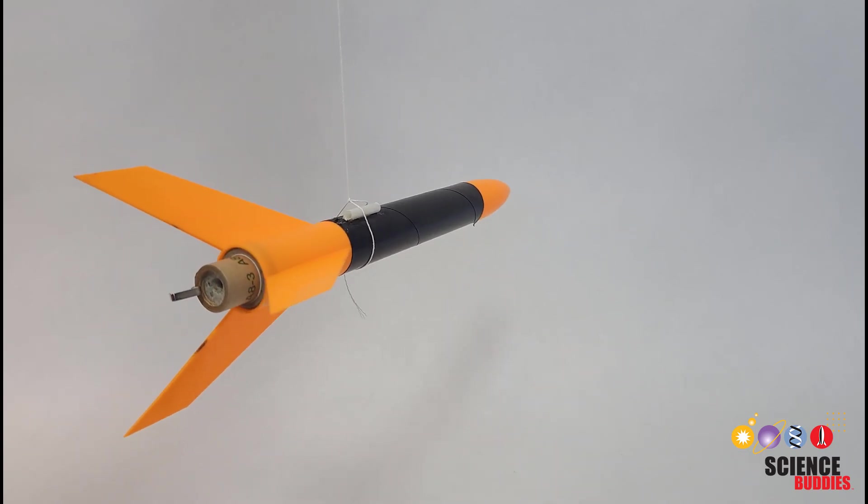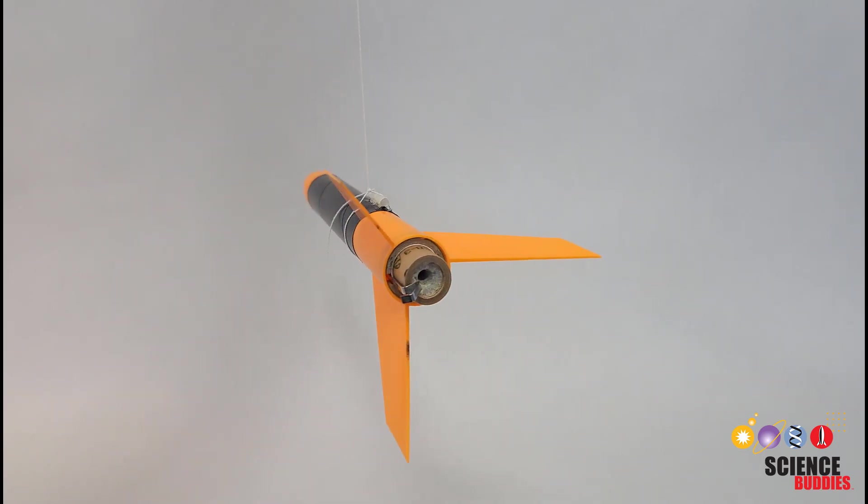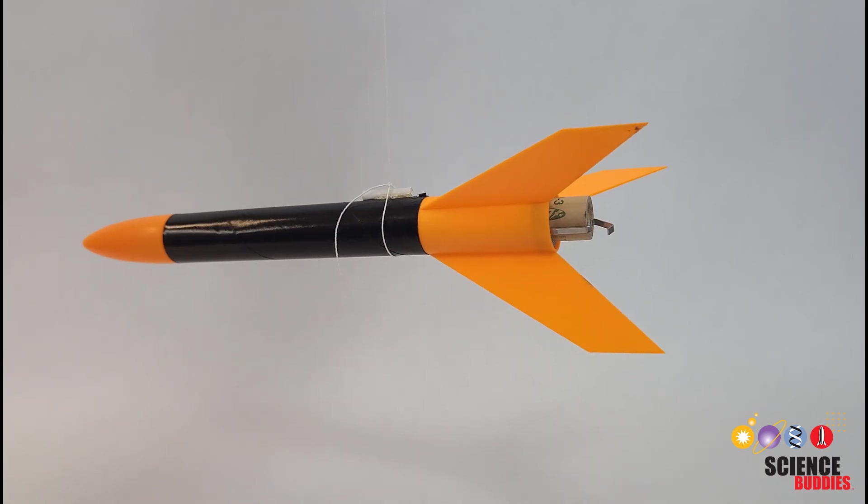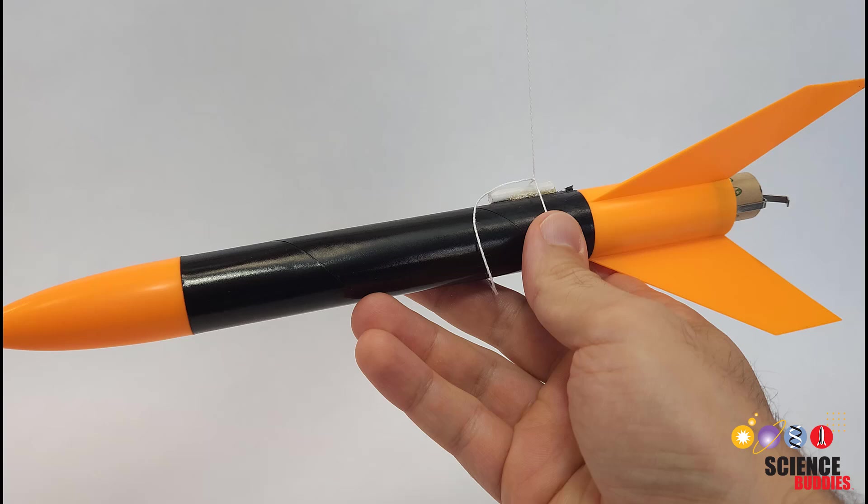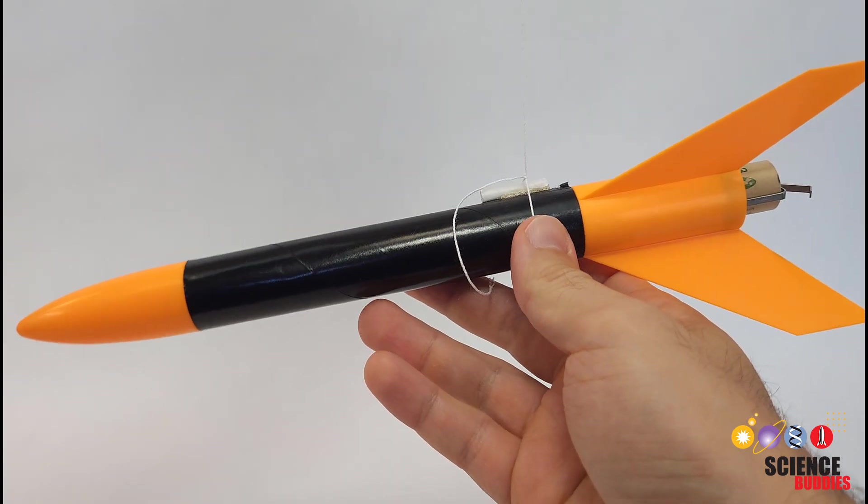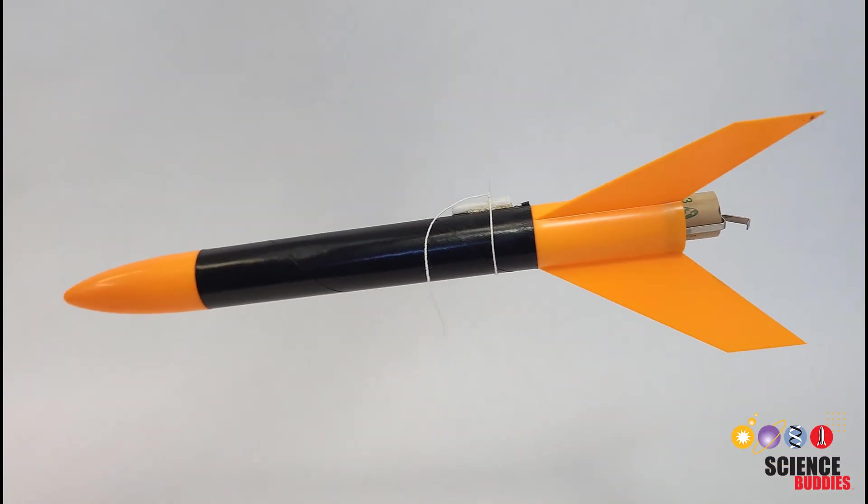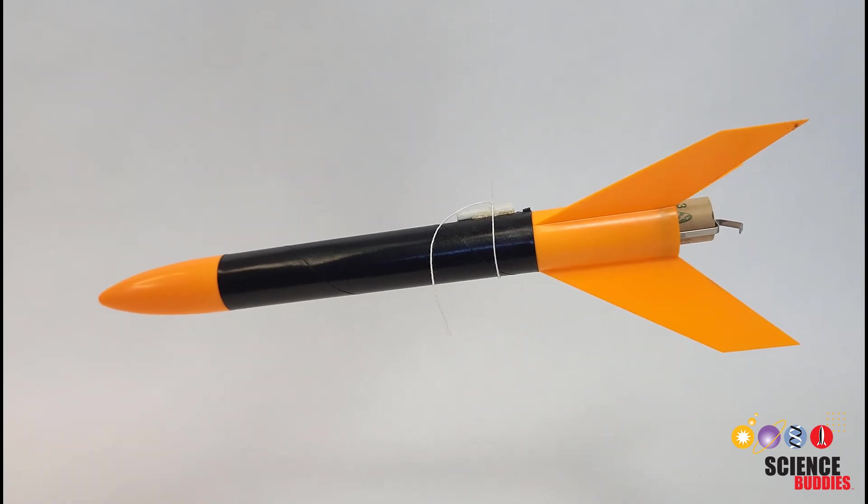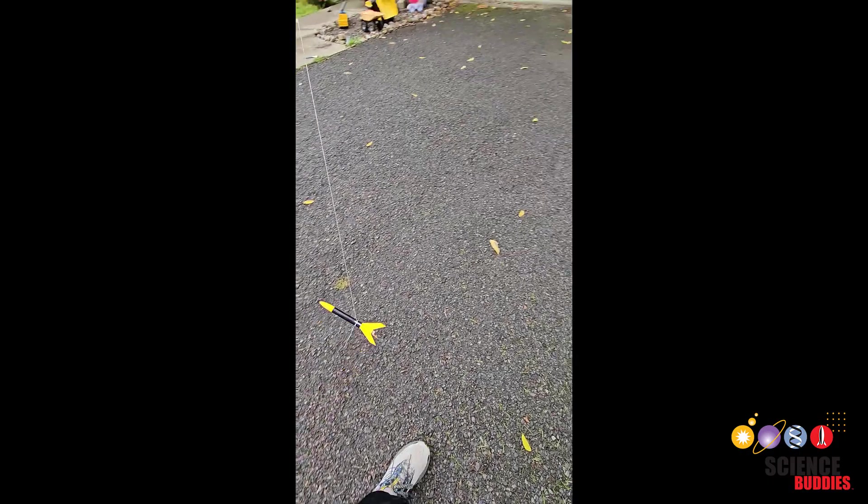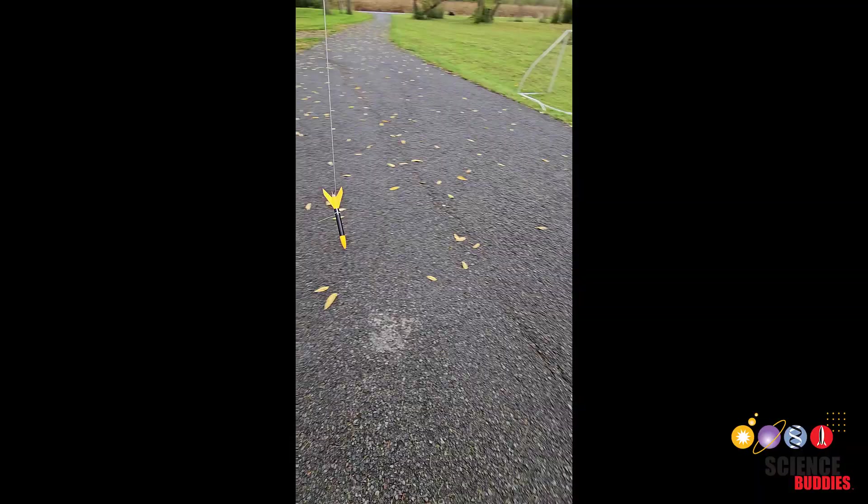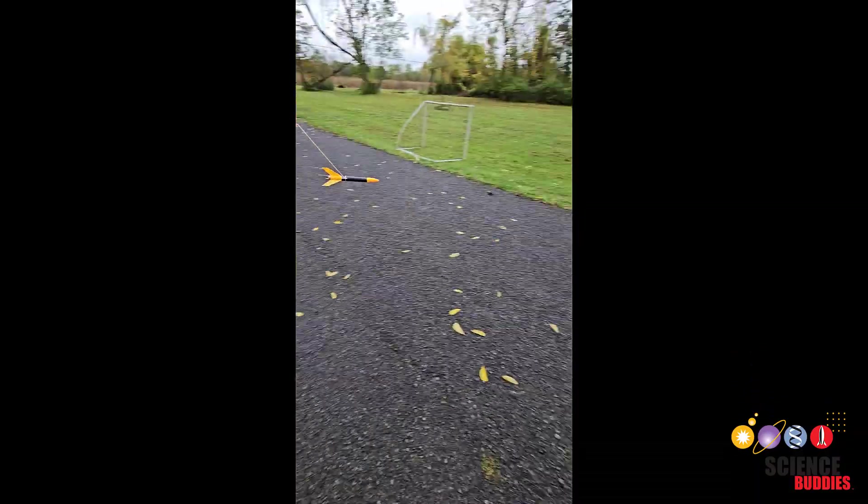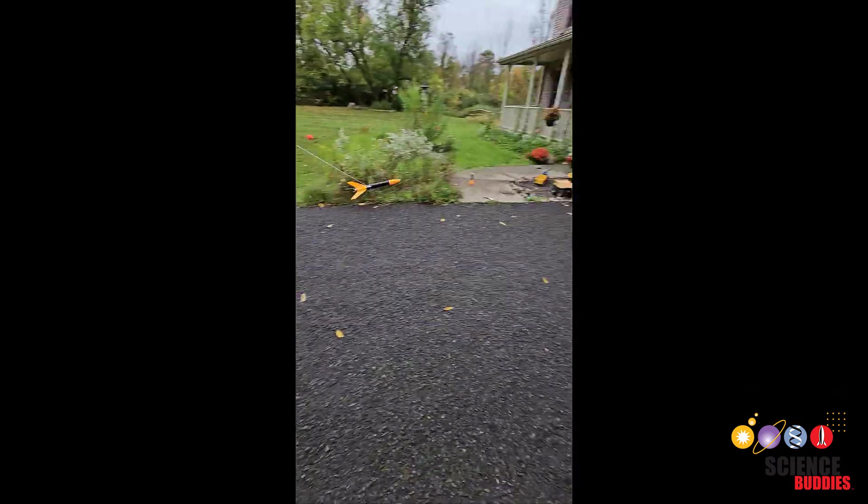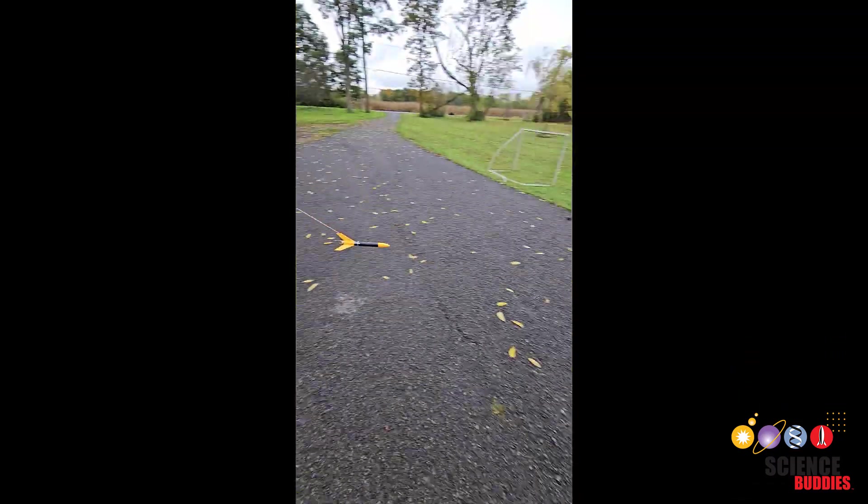There's a simple experiment you can do to test a model rocket's aerodynamic stability without launching it and using up an engine. First, tie a string around the rocket's center of mass. Do your best to slide the string back and forth to get the rocket balanced and then tape it in place so it doesn't move around during the experiment. Next, go outside to an area free from obstructions and twirl the rocket around on the string. Assuming you have tied the string to the center of mass and the rocket's design is stable, it should fly nose first.